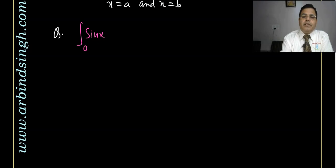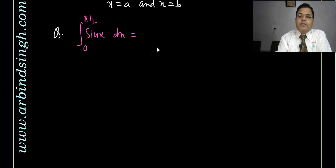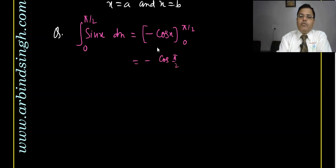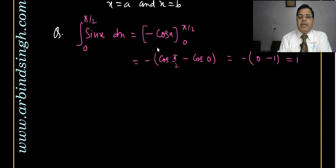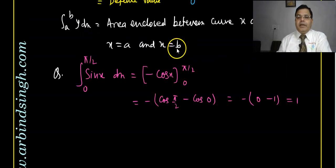For example, we have to find the integration of sin x from 0 to π/2 dx. The integration of sin x is minus cos x, with limit 0 to π/2. Here π/2 is called the upper limit and 0 is called the lower limit. So we get: minus cos(π/2) minus minus cos(0), which gives 0 plus 1 = 1. This is a fixed value, that is why it is called a definite integral.